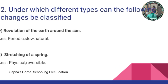D: revolution of the earth around the sun. It is a periodic change, it is slow, and it is a natural change. E: stretching of a spring is a physical and reversible change.